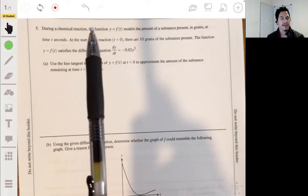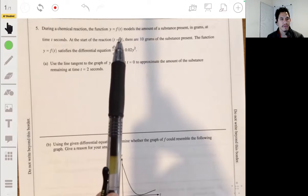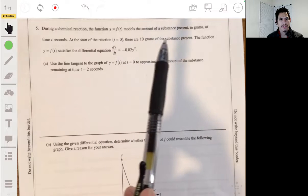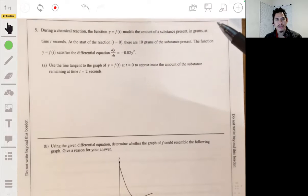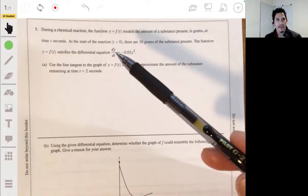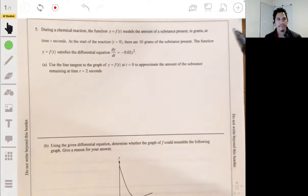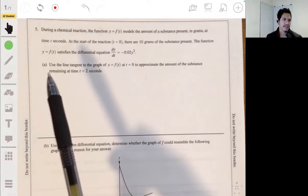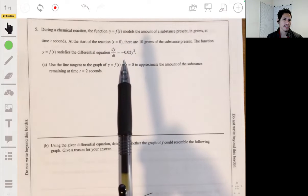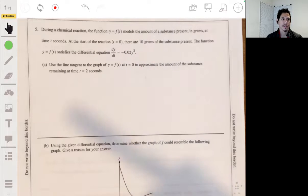In problem five, we have that during a chemical reaction, the function y equals f of t models the amount of a substance present in grams at time t seconds. At the start of the reaction, t equals zero, there are 10 grams of the substance present. And the function y equals f of t satisfies the differential equation dy dt equals negative 0.02 y squared.